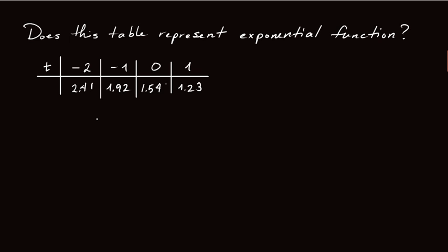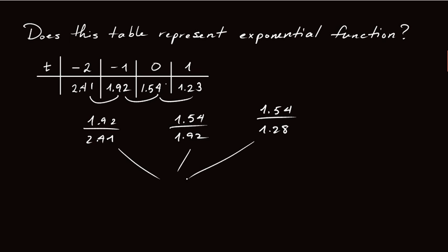We want to look at the successive ratios. In this case, it's 1.92 divided by 2.41. That's the first. The second ratio is 1.54 divided by 1.92. The third ratio is 1.54 divided by 1.23. And if you plug these into your calculator, you'll see that all of these numbers are very close to 0.8.